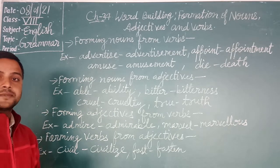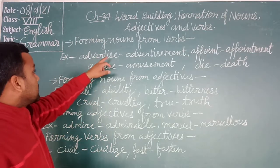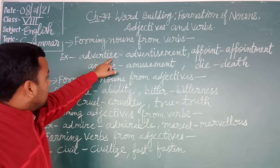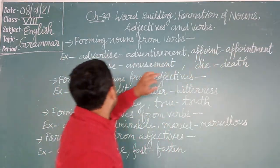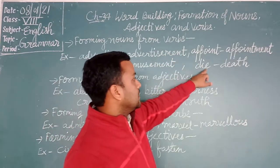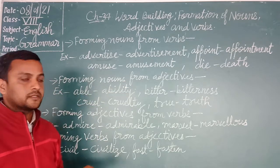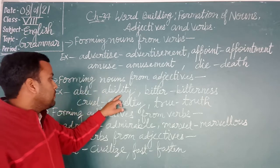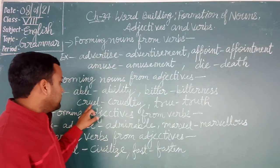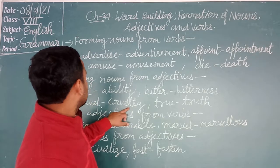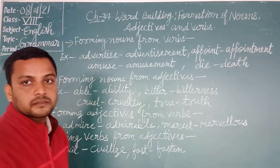See here — forming nouns from verbs. 'Add' is a verb, then the noun is 'addition.' 'Appoint' is a verb, the noun is 'appointment.' 'Amuse' is a verb, the noun is 'amusement.' 'Die' is a verb and the noun is 'death.' Next, forming nouns from adjectives: 'able' is an adjective, the noun is 'ability.' 'Equal' is an adjective, the noun is 'equality.' 'True' is an adjective and 'truth' is the noun.